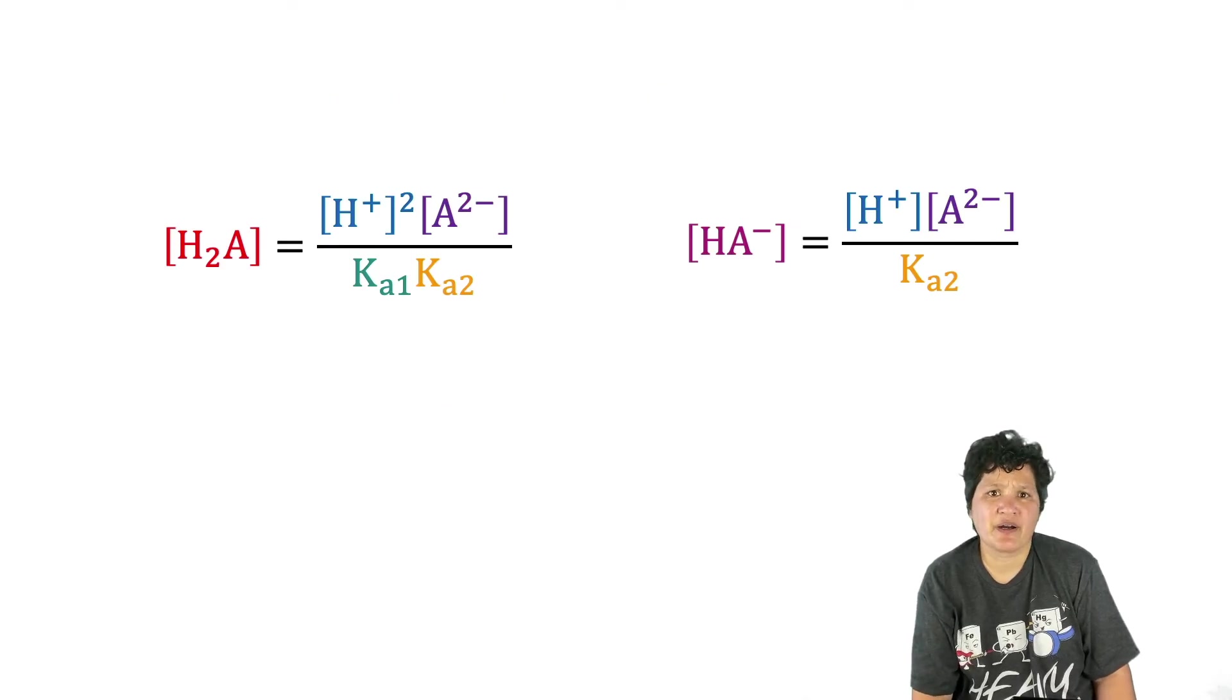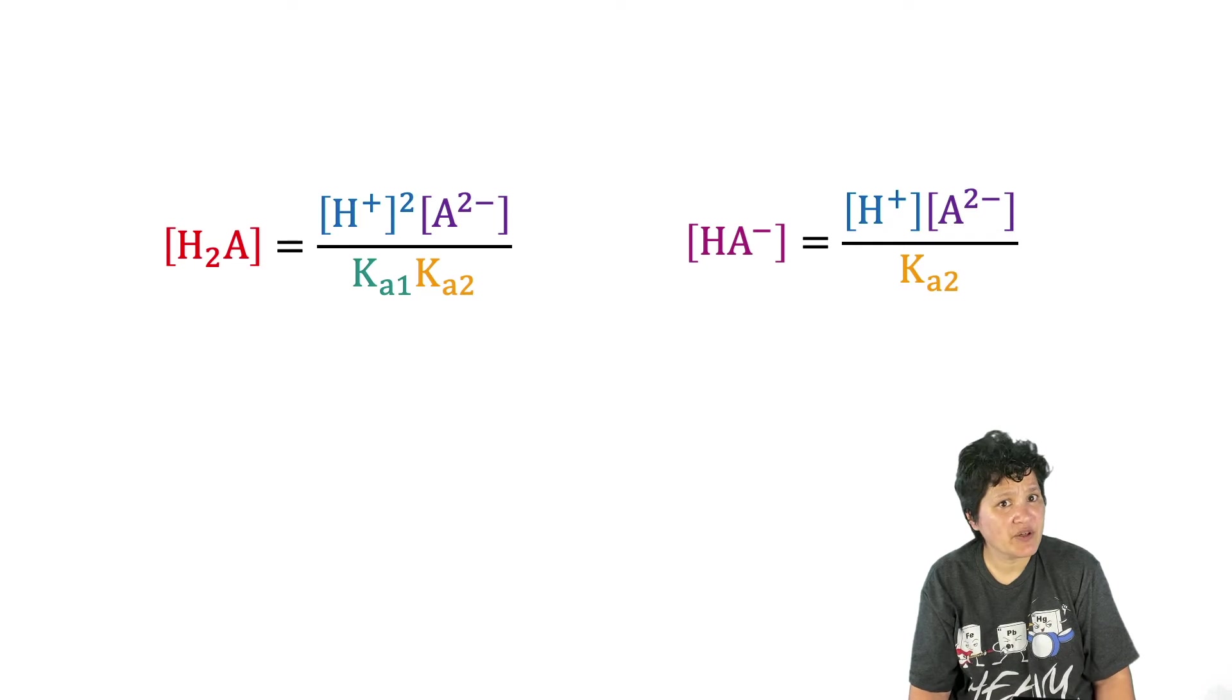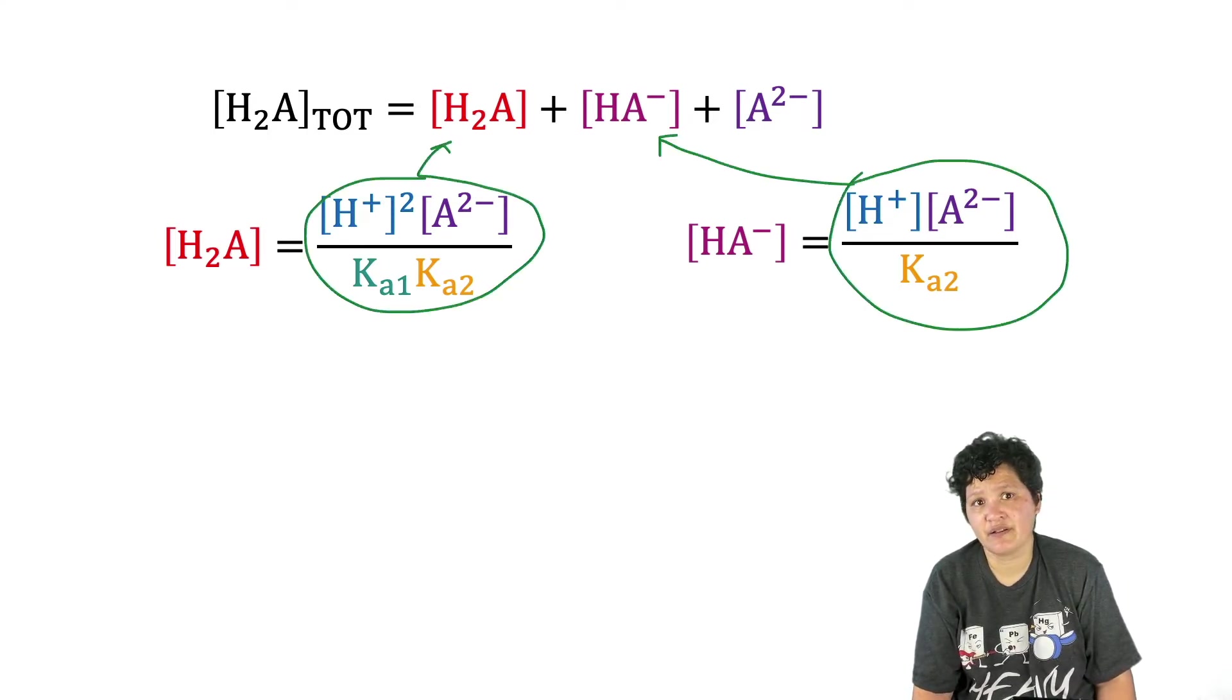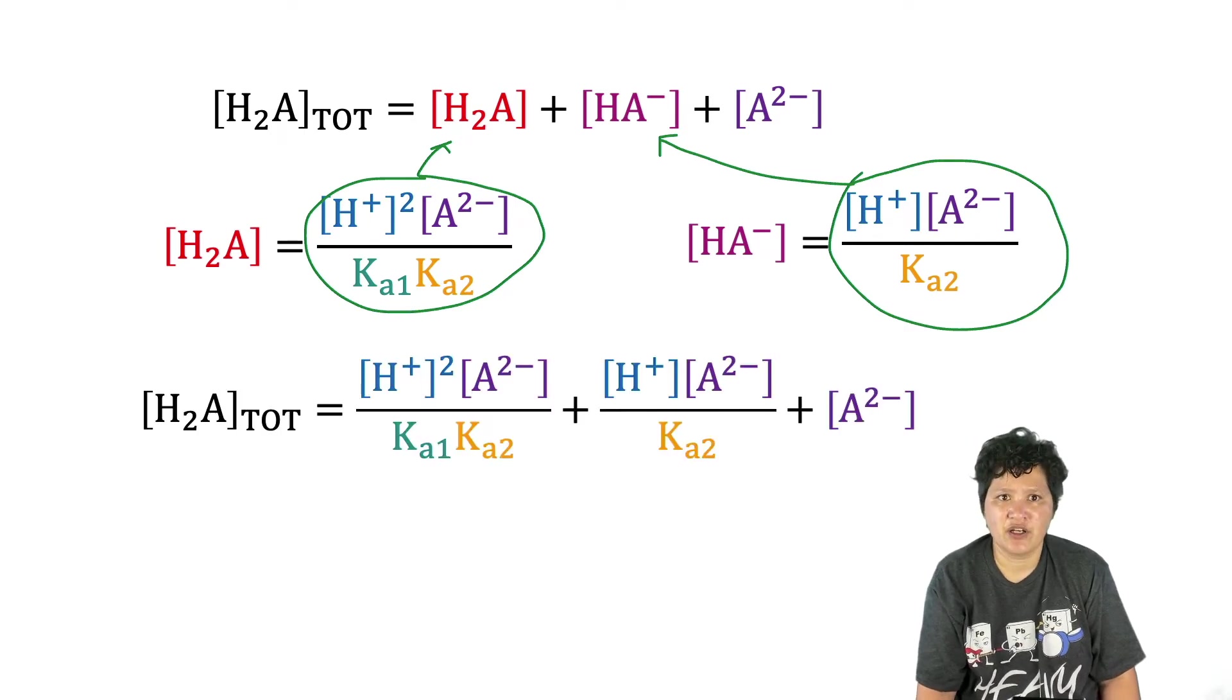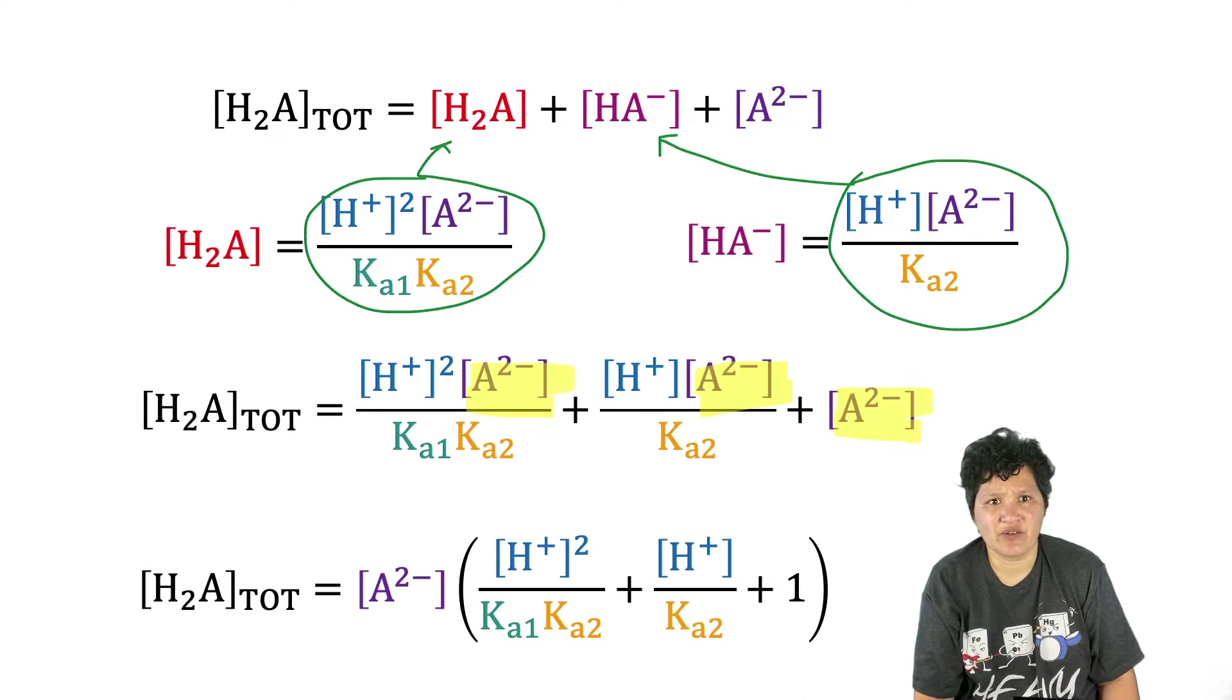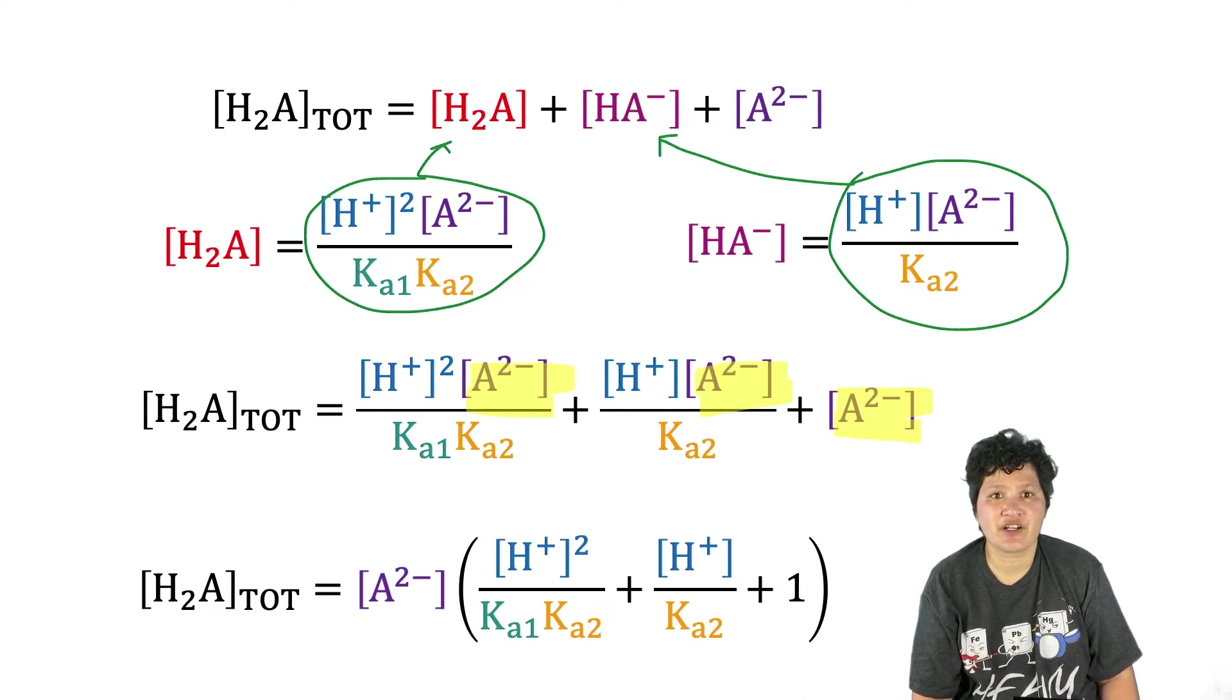Here are the two expressions we derived, one for H2A and one for HA minus. And now we're going to bring back our expression for the total amount of acid in the system. See how it's got H2A and HA minus concentrations? We're going to substitute these expressions into that. And we get this expression. Note that each term has an A2 minus concentration. Let's factor that out. Now we're ready to start calculating fractional composition.